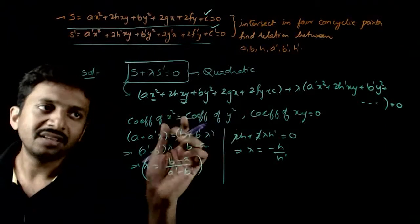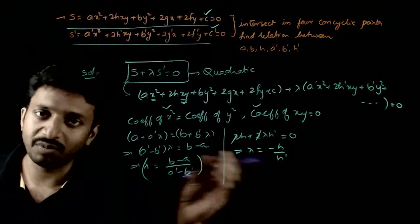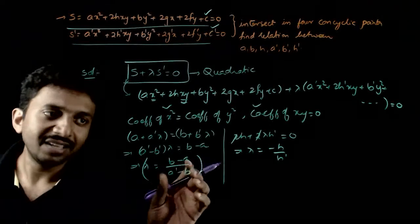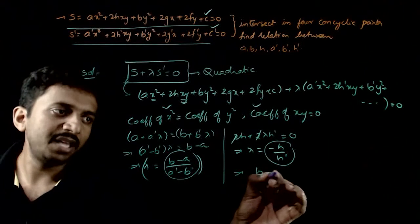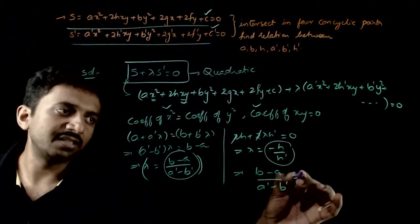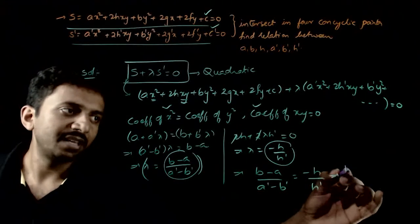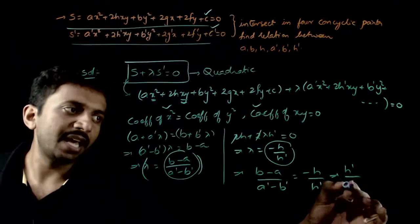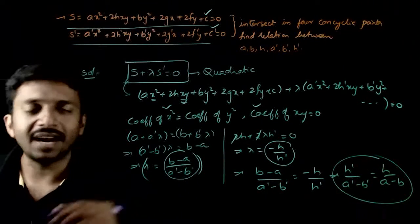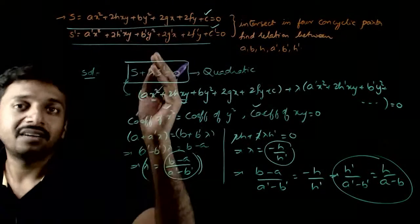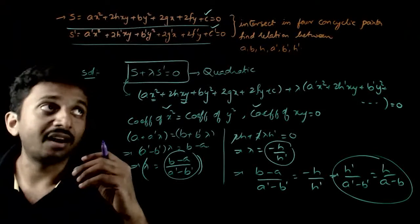For this to be a circle, both conditions must be valid simultaneously, so both expressions for λ must be equal: (B − A) / (A dash − B dash) = −H / H dash. This implies H dash / (A dash − B dash) = H / (A − B), which is the condition that must be satisfied for the intersection points of the two curves to be concyclic.